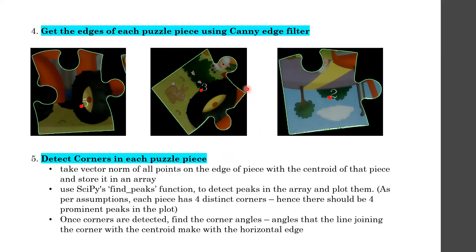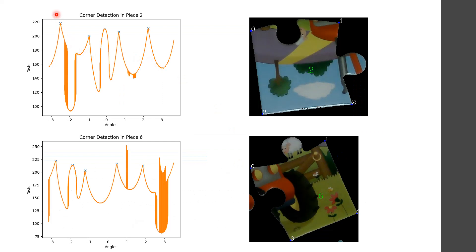Once I have the centroid, I calculate edges using the Canny edge filter. For each puzzle piece, I apply the Canny edge filter to get edge information and store all edge points in an array. I then calculate the distance of each edge point with respect to the centroid, and pass this array to SciPy's find_peaks function to detect peaks — which helps us detect the corners of each puzzle piece.